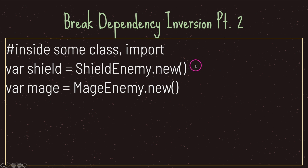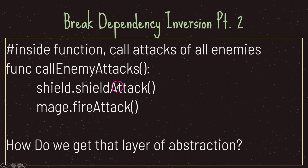Inside a different class we import both of our classes from the previous slide. We create instance objects from the shield enemy class and the mage enemy class, noting again that they are not inheriting from anything — they are independent classes. In this third class we want a function that calls all the enemies' attack functions. So we call the shield attack method on the shield instance and the fire attack method on the mage instance. This is how we break dependency inversion — we are directly calling the methods with no abstraction.